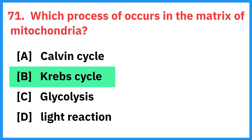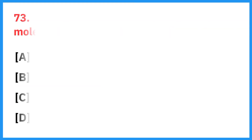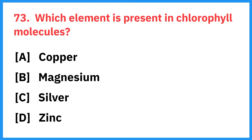Which process occurs in the matrix of mitochondria? Right answer is the Krebs cycle. During muscle contraction, which ion plays a central role in initiating the process? Right answer is calcium.